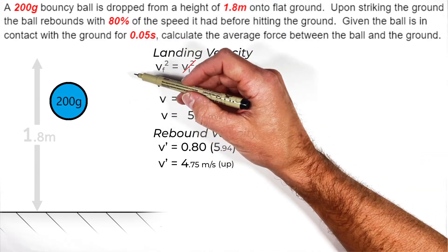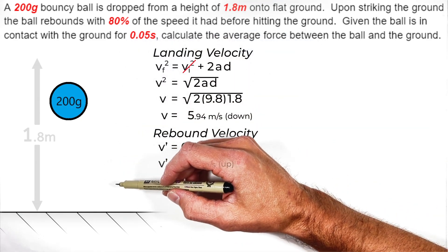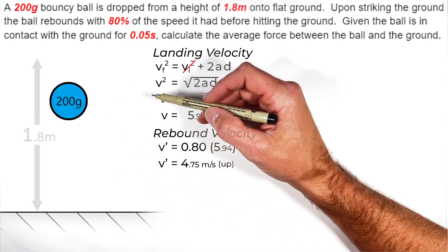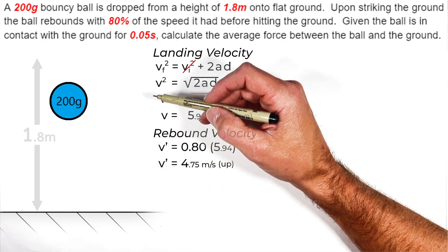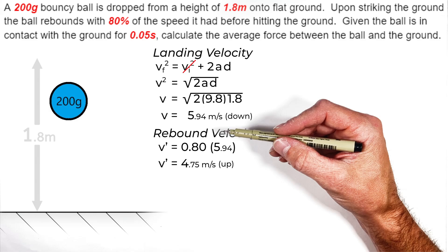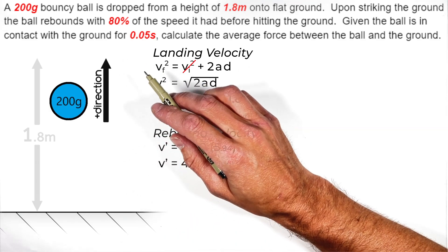You see, this ball didn't just slow down some. It actually hit the ground and bounced back in the opposite direction, and the way we're going to account for that change in direction is by saying that up is the positive direction.